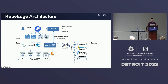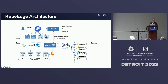So you can have cloud-controlled edge. Within the edge, we support CSI, CRI, and CNI. For CRI, we support not only containerd but all kinds of standard container runtimes. We also use the PubSub model with Mosquitto to connect all the devices.